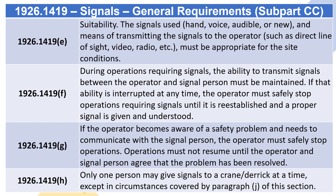If that ability is interrupted at any time, the operator must safely stop operations requiring signals until it is re-established and a proper signal is given and understood. 1926.1419(G): If the operator becomes aware of a safety problem and needs to communicate with the signal person, the operator must safely stop operations. Operations must not resume until the operator and signal person agree that the problem has been resolved. 1926.1419(H): Only one person may give signals to a crane/derrick at a time, except in circumstances covered by paragraph (J) of this section.